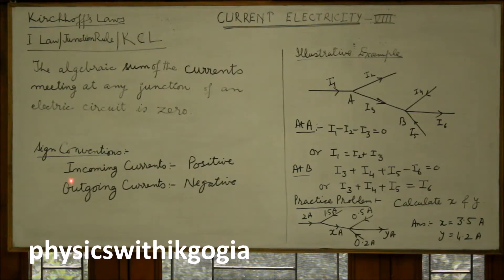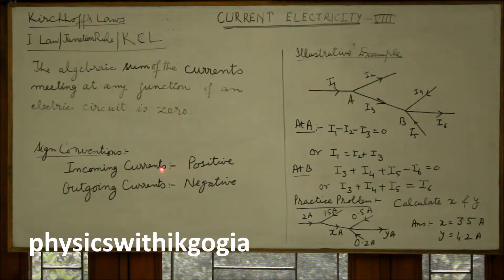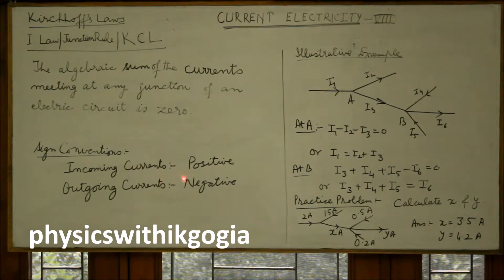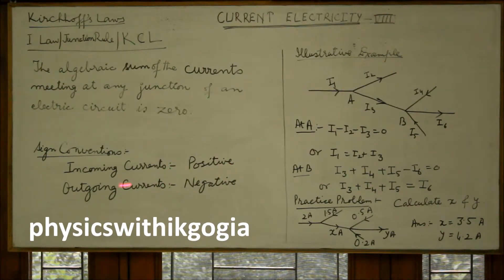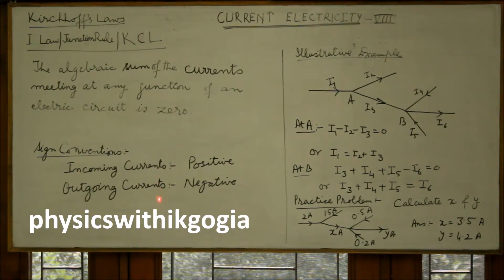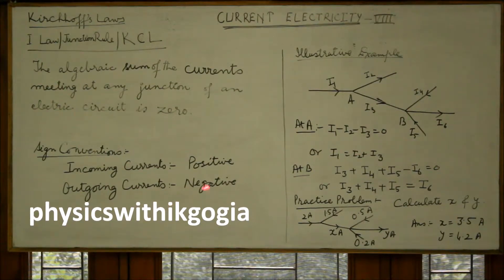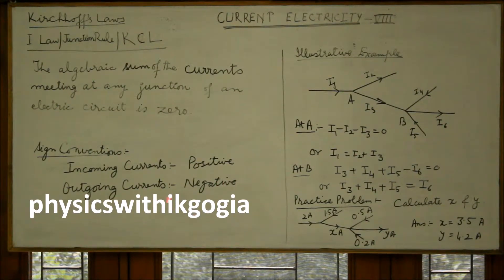We use sign conventions here. The incoming currents, that is currents approaching a junction, are taken as positive. And the outgoing currents, that is currents leaving a junction, are taken as negative.